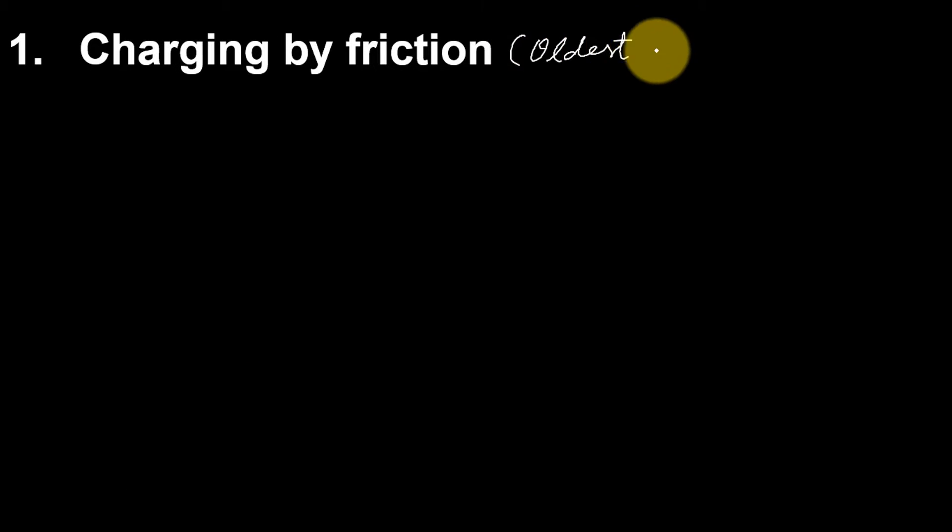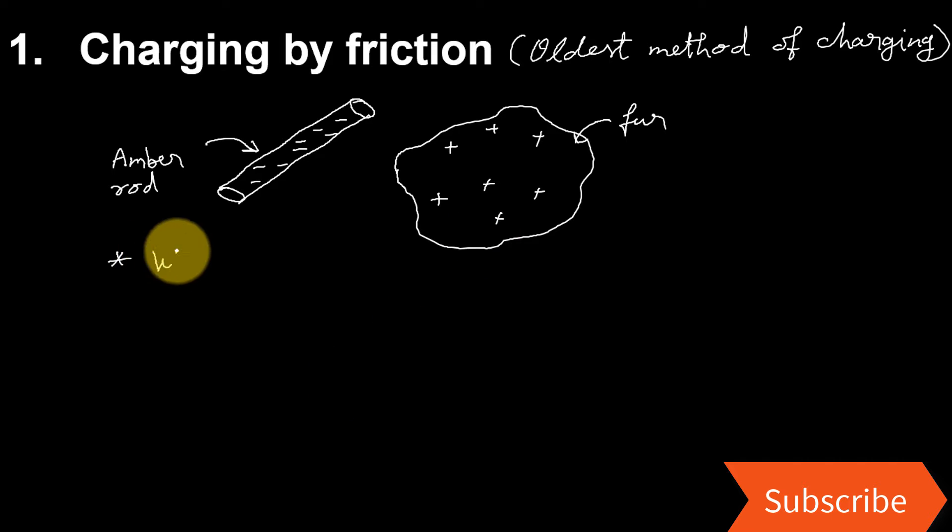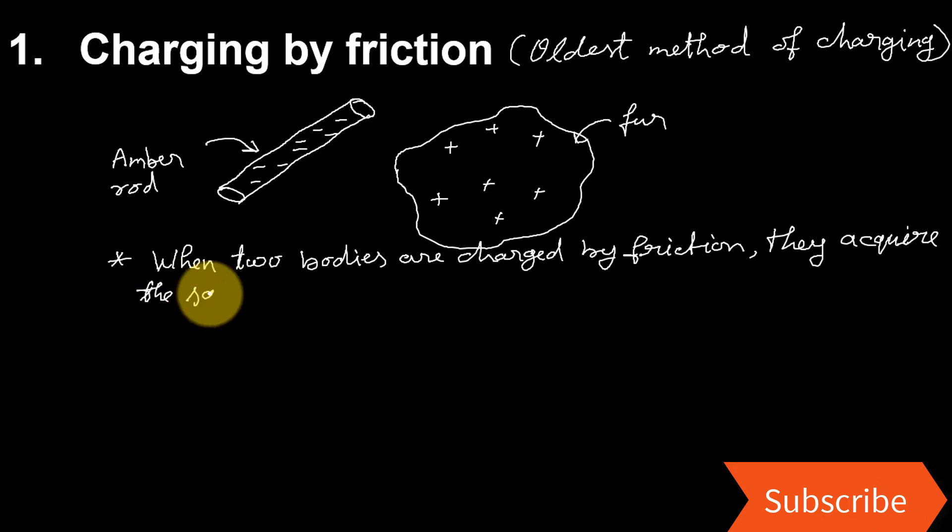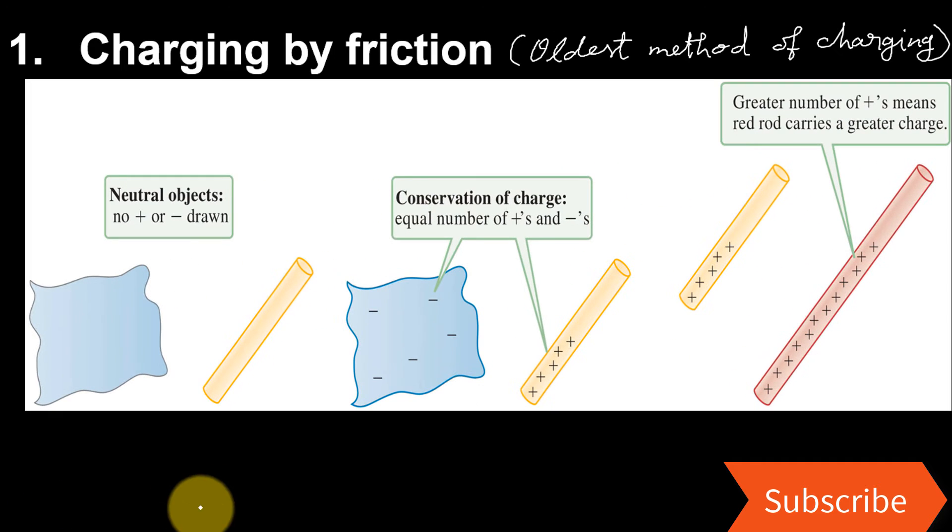First method is charging by friction. It is the oldest method of charging. It was found that when an amber rod is rubbed with fur, the rod became negatively charged and fur positively. When two bodies are charged by friction, they acquire the same magnitude of charge but their nature always remains opposite. I mean if one body is positively, then other is negatively charged.